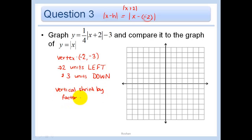Let's put all these things together. I start at the point negative 2, negative 3. It's opening up because a is positive, but instead of going up 1 over 1, I'm going up 1 over 4. Because this is a vertical shrink by a factor of one fourth, the right side mirrors the left side.